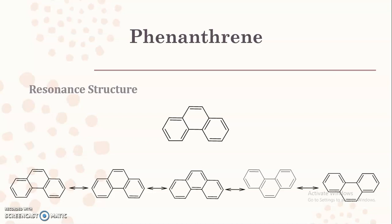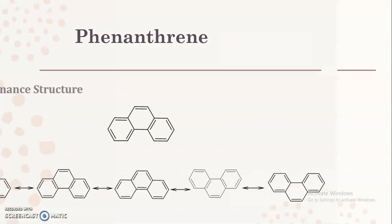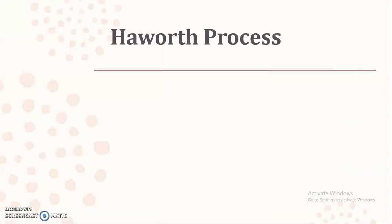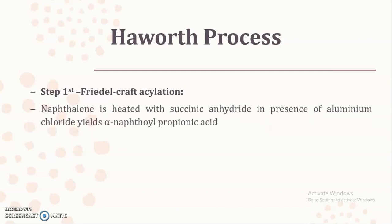After seeing this introductory part, we are going to start with the methods used for the preparation of phenanthrene. The first and most important method is the Haworth process. We already know this process. In the case of naphthalene synthesis we saw Haworth process consisting of five different steps. Similar five steps are applicable in the synthesis of phenanthrene, where instead of benzene we are going to use naphthalene as the starting material.